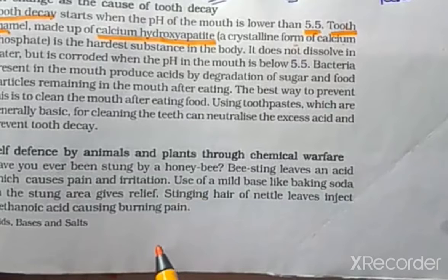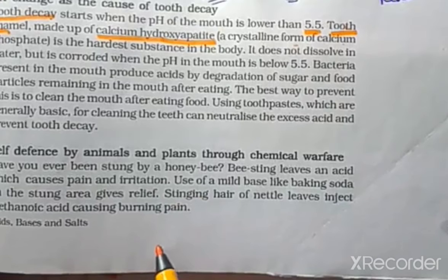There are two questions that came in the preparatory and model papers. One is about tooth decay. Tooth decay starts when the pH of the mouth is lower than 5.5. At that time, the tooth enamel, made up of calcium hydroxyapatite — the hardest substance in the body — does not dissolve in water but is corroded when the pH of the mouth falls below 5.5. The bacteria present in the mouth produce acid by degradation of sugar and food particles. To prevent this, cleaning the mouth after eating food using toothpaste, which is generally basic, can neutralize the excess acid and prevent tooth decay.